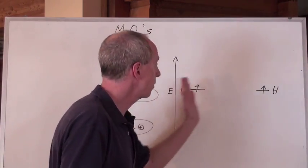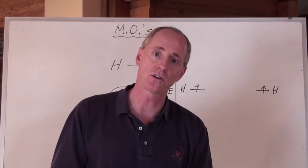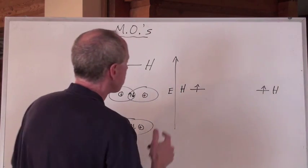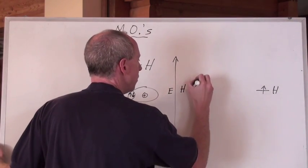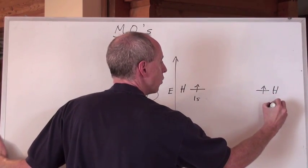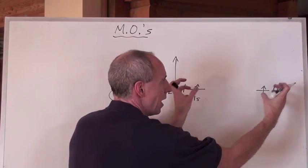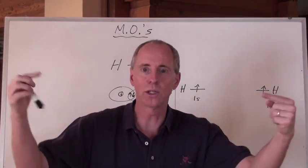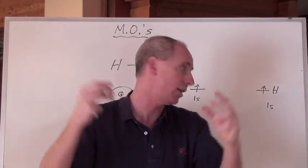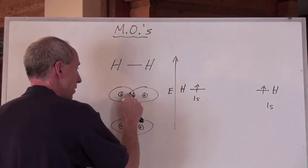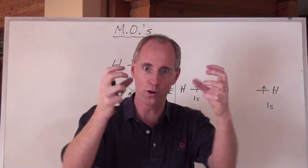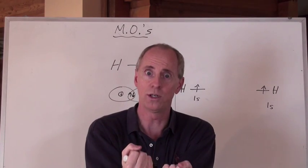We can draw something called an energy level diagram that actually describes what's going on here too in a very rudimentary fashion. Take a look. Here is hydrogen and here is the electron in this one's 1s orbital, and here's the electron in the other hydrogen's 1s orbital. Two hydrogens are coming together. As the two electrons are coming together, the electron attracting the proton here and the proton here attracting the other electron here. As the bond is forming, energy is being released.